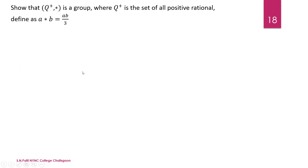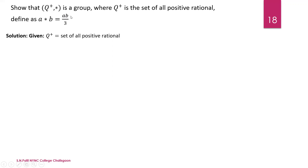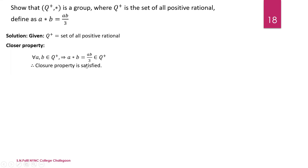Let Q+ be the set of positive rational numbers. First is the closure property. Take any two elements a, b in Q+. Then a star b equals a into b divided by 3. The product of two positive rationals is again positive, and dividing by 3 keeps it positive, so ab/3 belongs to Q+. Closure property is satisfied.